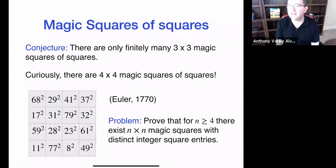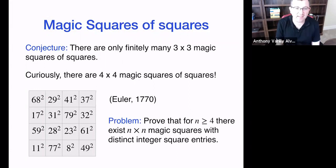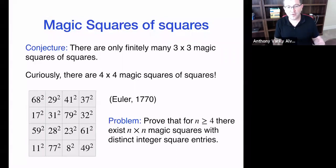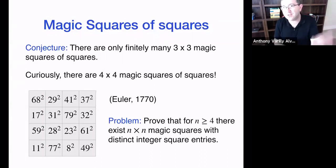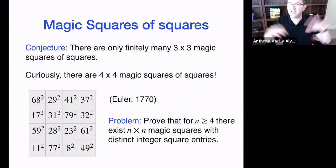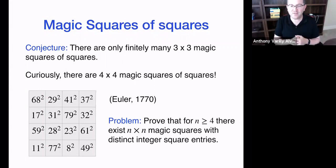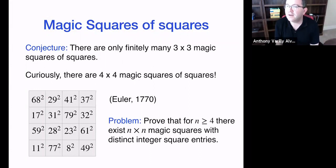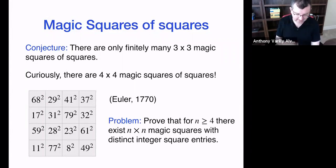As n grows, the number of variables grows like n^2, so you're in projective space of dimension ~n^2-1, but the number of constraints from the quadrics grows only linearly. So these varieties very rapidly become fun — I'm not surprised they're packed with points. It would be nice to show once and for all that n×n magic squares of squares exist for all n ≥ 4. And that's what I have for you today — thank you very much.